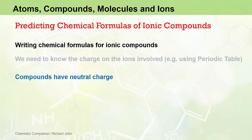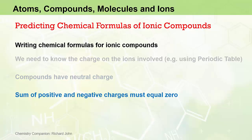The next thing we need to appreciate is that unlike the ions from which they are formed, the overall compound has no net charge. Compounds have neutral charge. Therefore, the sum of all the positive and negative charges from the cations and anions must equal zero.